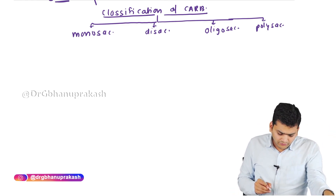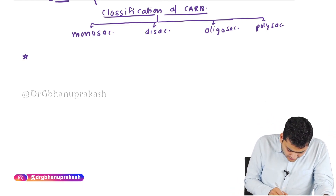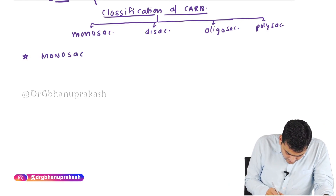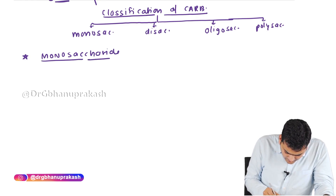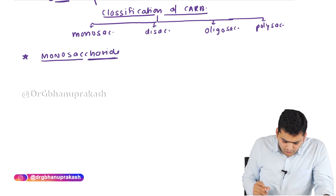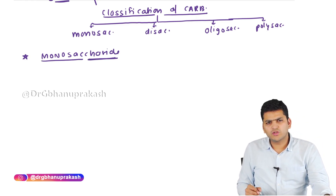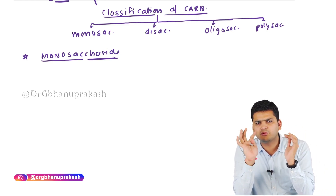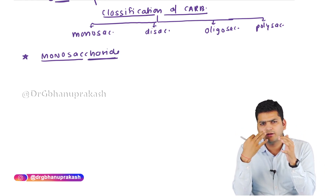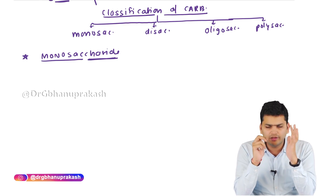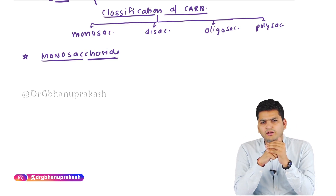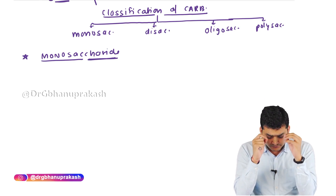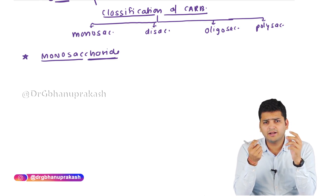Starting with monosaccharide: monosaccharide is the building block to make any type of carbohydrate. Whether you want to make disaccharide, oligosaccharide, or polysaccharide, you will require monosaccharide. It is the fundamental unit.